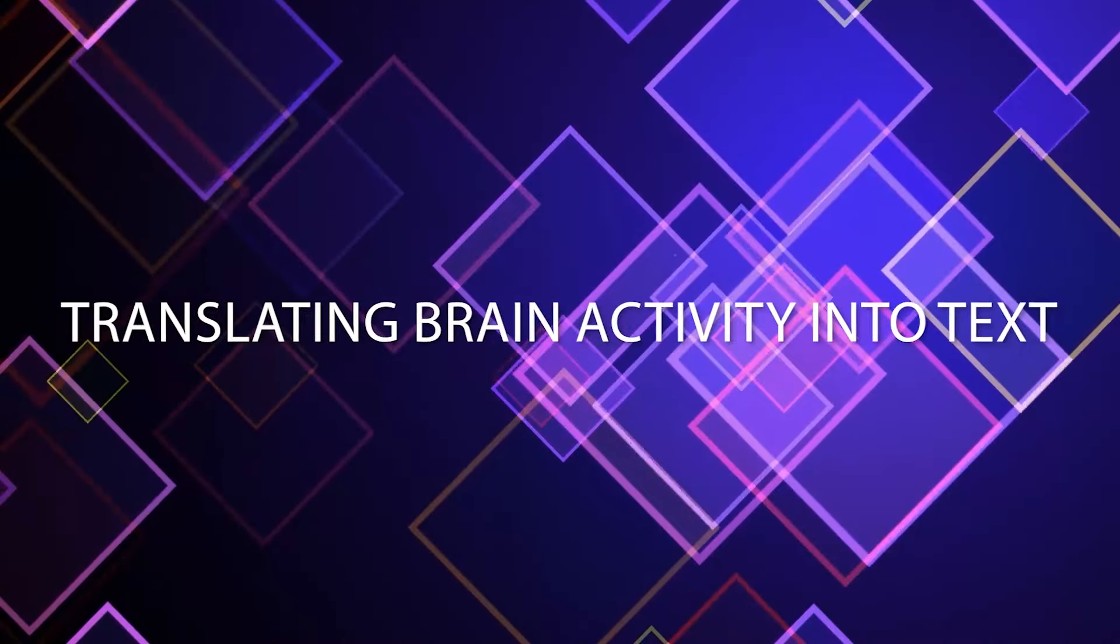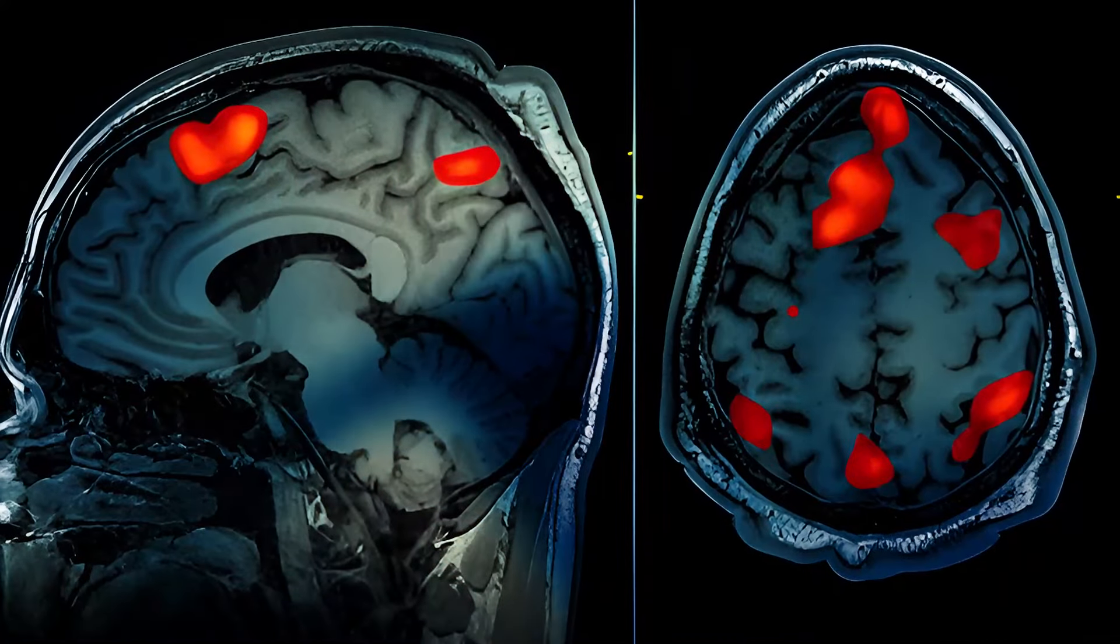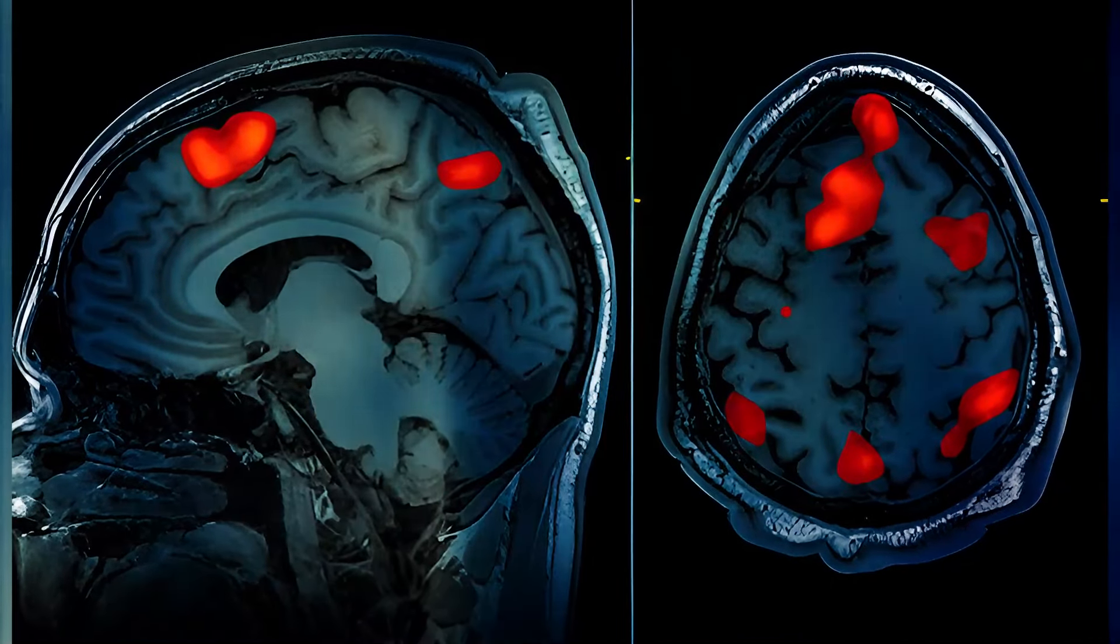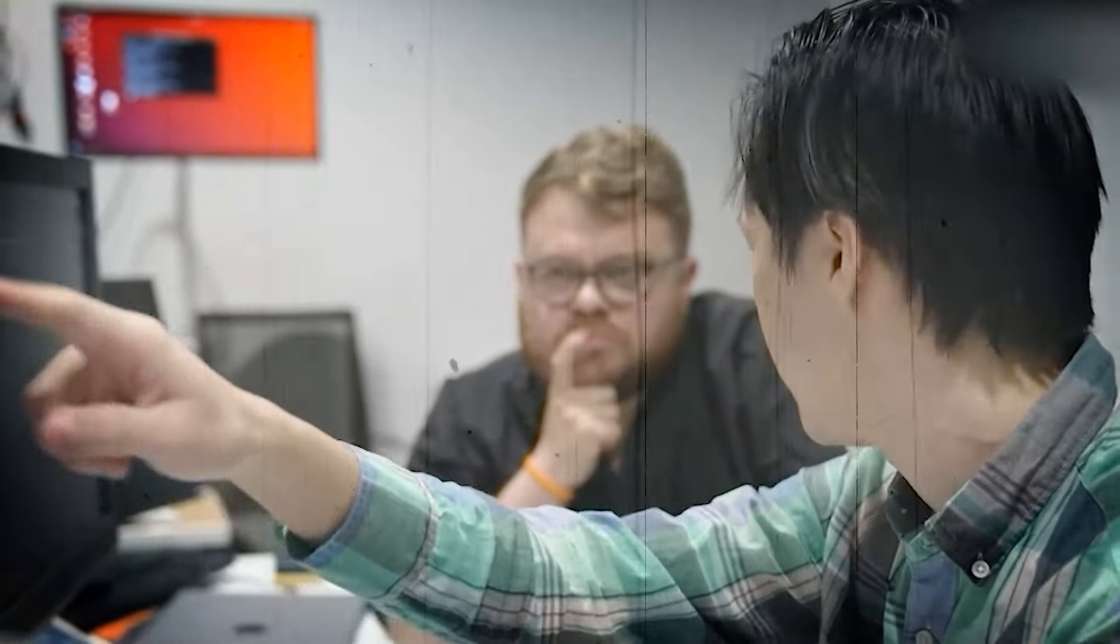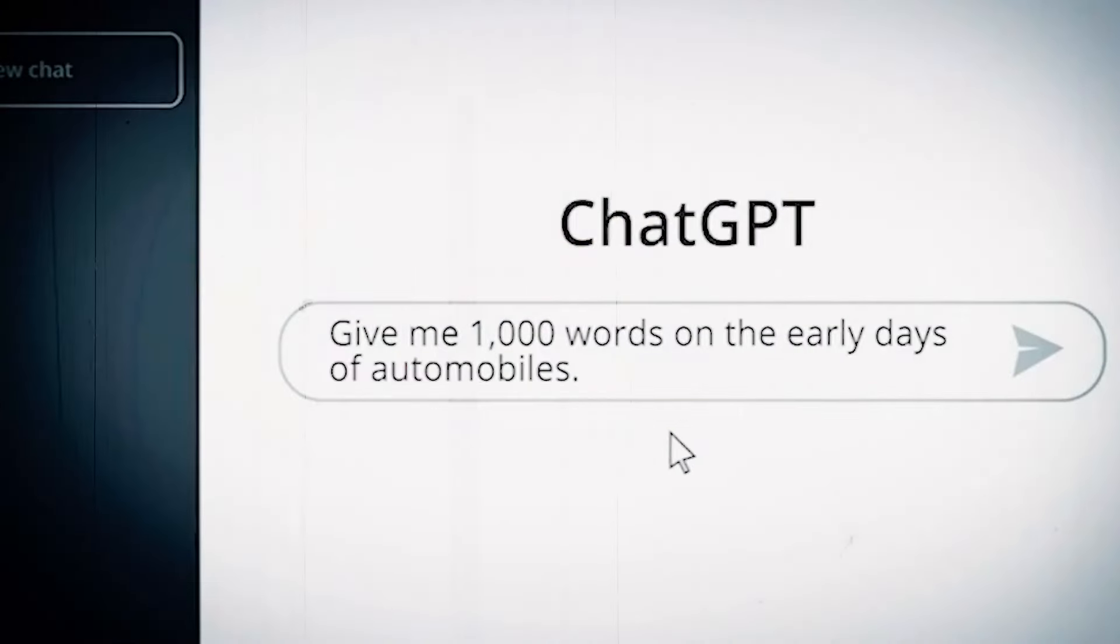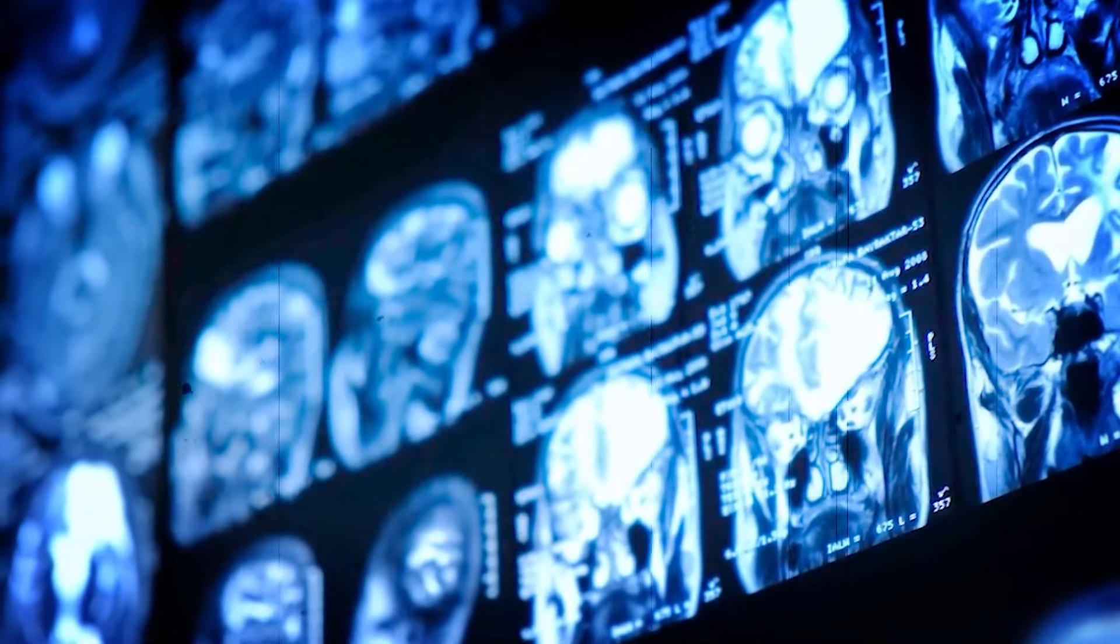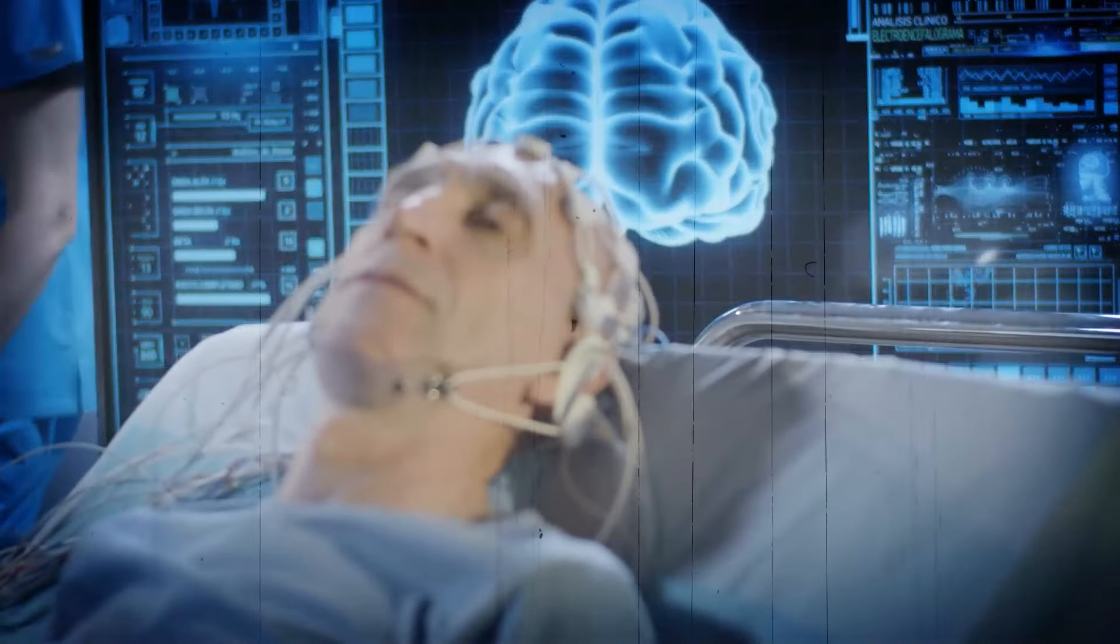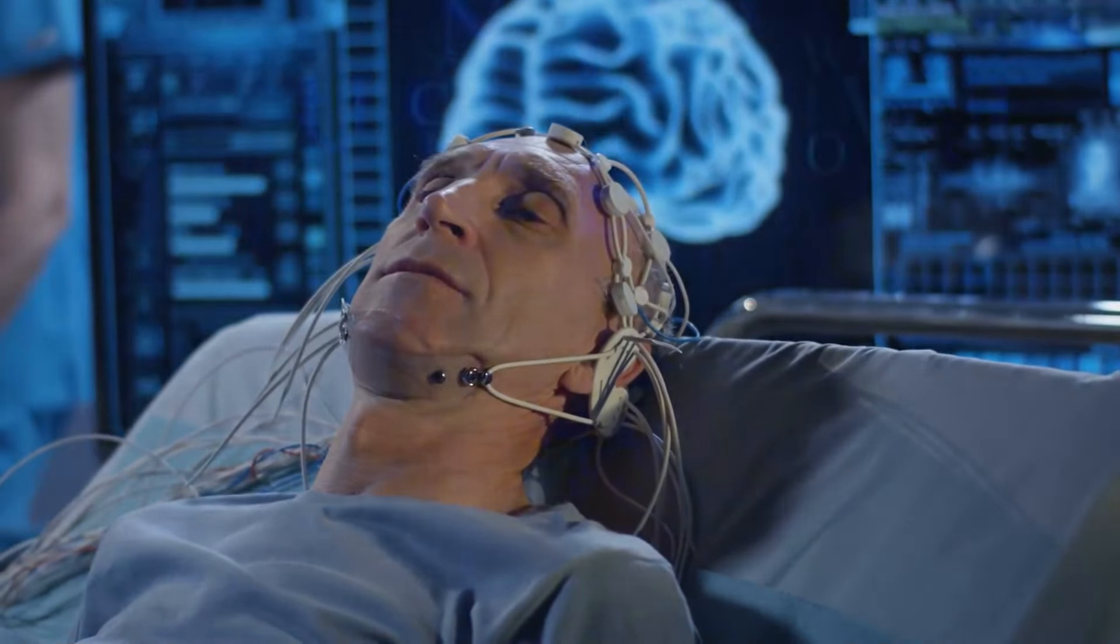To address the challenges posed by slow temporal resolution in non-invasive brain scans, researchers at the University of Texas developed the semantic decoder. This encoding model leverages generative AI to accurately translate brain responses into understandable text. GPT basically made our predictions a lot better. By training the model on brain activity recorded during exposure to spoken narratives, the researchers constructed a system capable of generating coherent word sequences with proper grammar and structure. The semantic decoder represents a significant step towards achieving the goal of mind-reading AI.